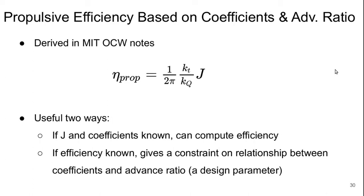So this expression is useful in a couple of different ways. If J, which is a propeller design parameter, and the coefficients are known, we can directly compute what we expect the efficiency to be. Or if the efficiency is known, or we have an efficiency target, it gives us a constraint on the relationship between the coefficients and the advanced ratio, which is a design parameter.